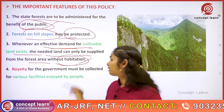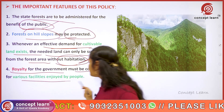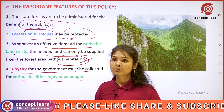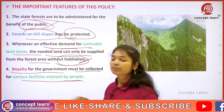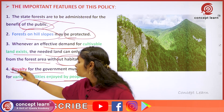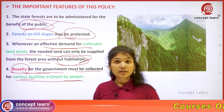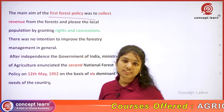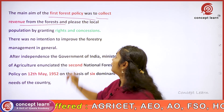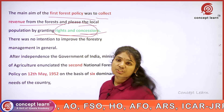The next feature is royalty — the government must collect royalty for various facilities enjoyed by the people from different forest products. When we use the facilities, we should pay some amount of money, that is nothing but royalty for the government. So the main aim of the First Forest Policy was to collect revenue from the forest and please the local population by granting rights and concessions.